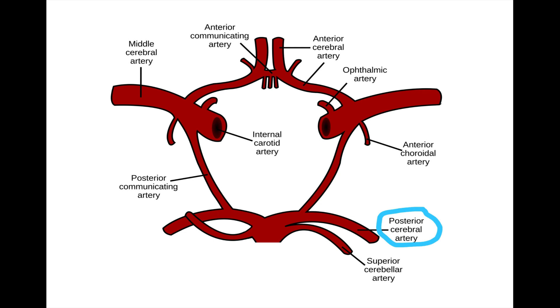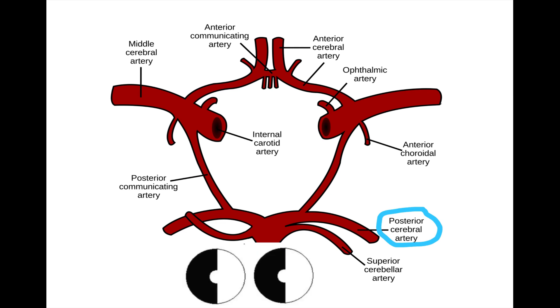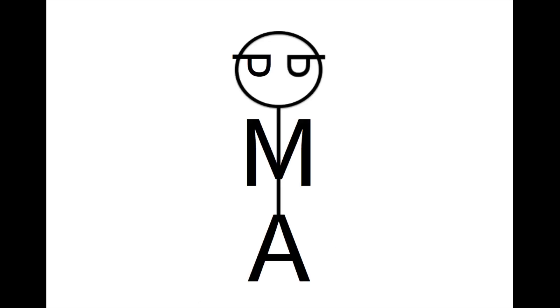Finally, a stroke in the territory of the posterior cerebral artery is associated with defects in the visual pathway. The most typical pattern seen is contralateral homonymous hemianopsia with macular sparing. You can remember the association of the posterior cerebral artery with the visual cortex by drawing two peas like sunglasses on the stick figure.